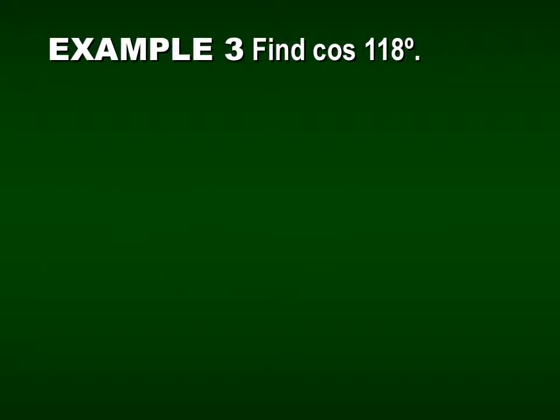Let's do cosine of 118 degrees. Again, not a special angle, so we use our calculator. Since they gave us degrees, we make sure our calculator mode is set to degrees. If the problem had given radians — such as if there were a pi or it said radians — we would set our mode to radians instead. But since it's 118 degrees, we keep the calculator in degree mode.